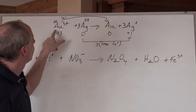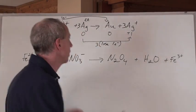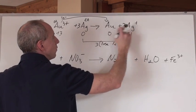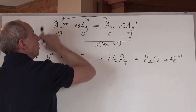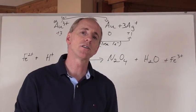Because it's balanced atomically, 1 Au, 1 Au, 3 Ags and 3 Ags, and it's balanced electrically. 3 positives on this side, and 0 make a total of 3 positives here, and 0, and 3 positives here, a total of 3 positives here. Equations have to balance atomically and electrically.